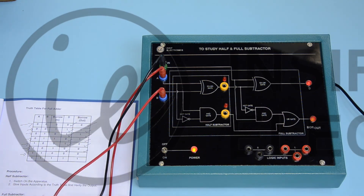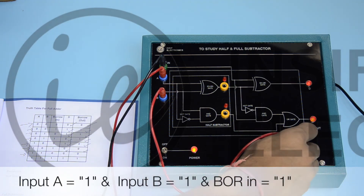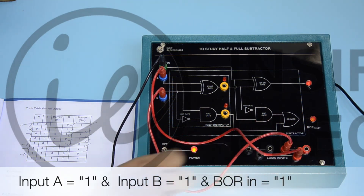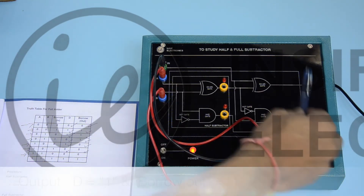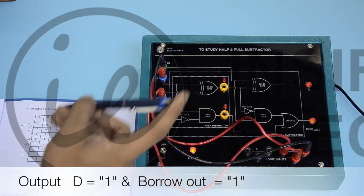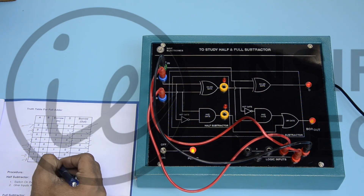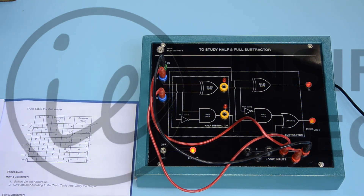Now connect A input to logic 1, B input to logic 1, and borrow in to 1. The output is 1, 1. As the outputs are according to the truth table, the full subtractor is also verified.